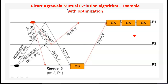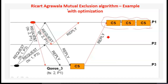That is another optimization here. If a site keeps on being in the critical section for a long time since there is no pending request, it can continue without interruption. This is how the Ricart-Agrawala algorithm works.